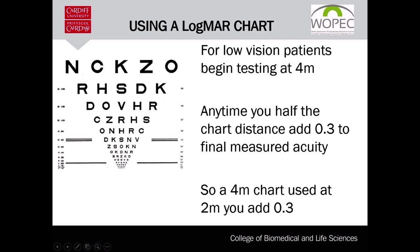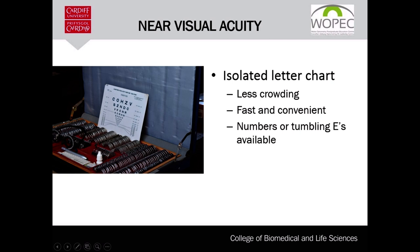The normal distance to use the chart is 4 meters; however, it is recommended to be used at 2 meters for people with very severe visual impairments. Anytime the distance between the patient and the chart is halved, you add 0.3 to the visual acuity measured. For near visual acuity, there are lots of charts and notations available. In this course we'll be using the N notation, and we categorize near visual acuity charts into two main forms: isolated letter charts and continuous reading charts.